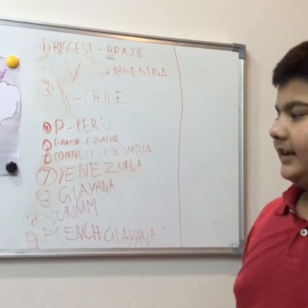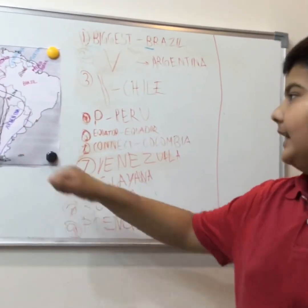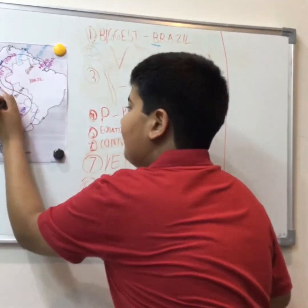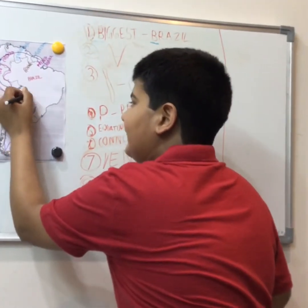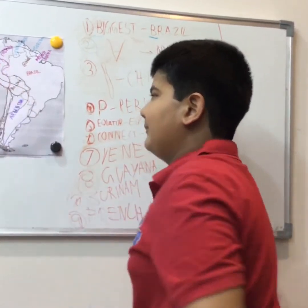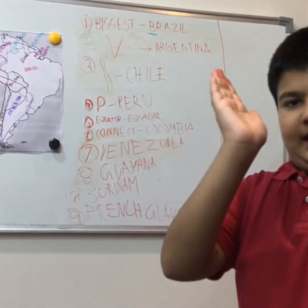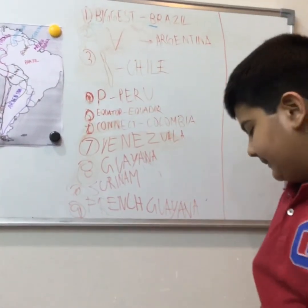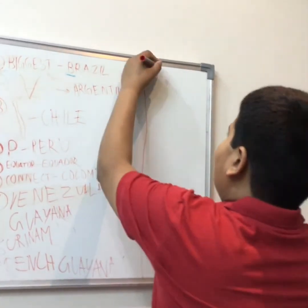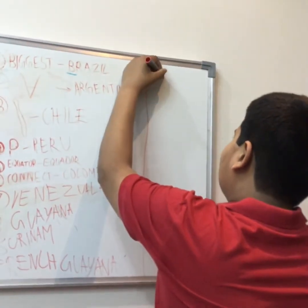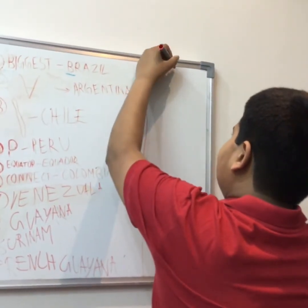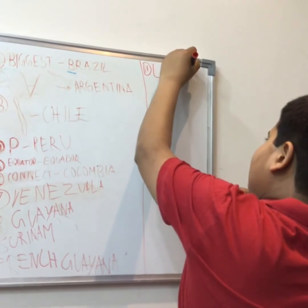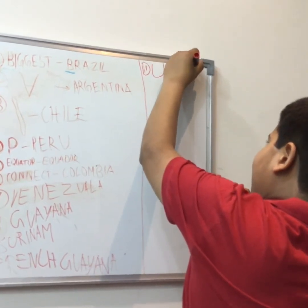We have now covered ten countries and three countries are left. The first of these is Bolivia, which is in the shape of a bowl. So: bowl-shaped Bolivia.